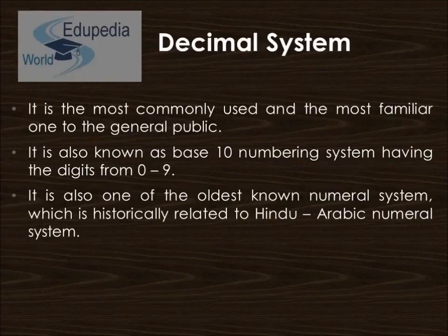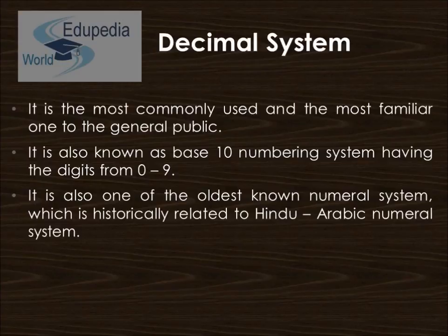Then comes the decimal system, which is the most commonly used and most familiar to humans. It is also known as the base-10 numbering system, having digits from zero to nine. It is one of the oldest numeral systems and is historically related to the Hindu-Arabic numeral system.